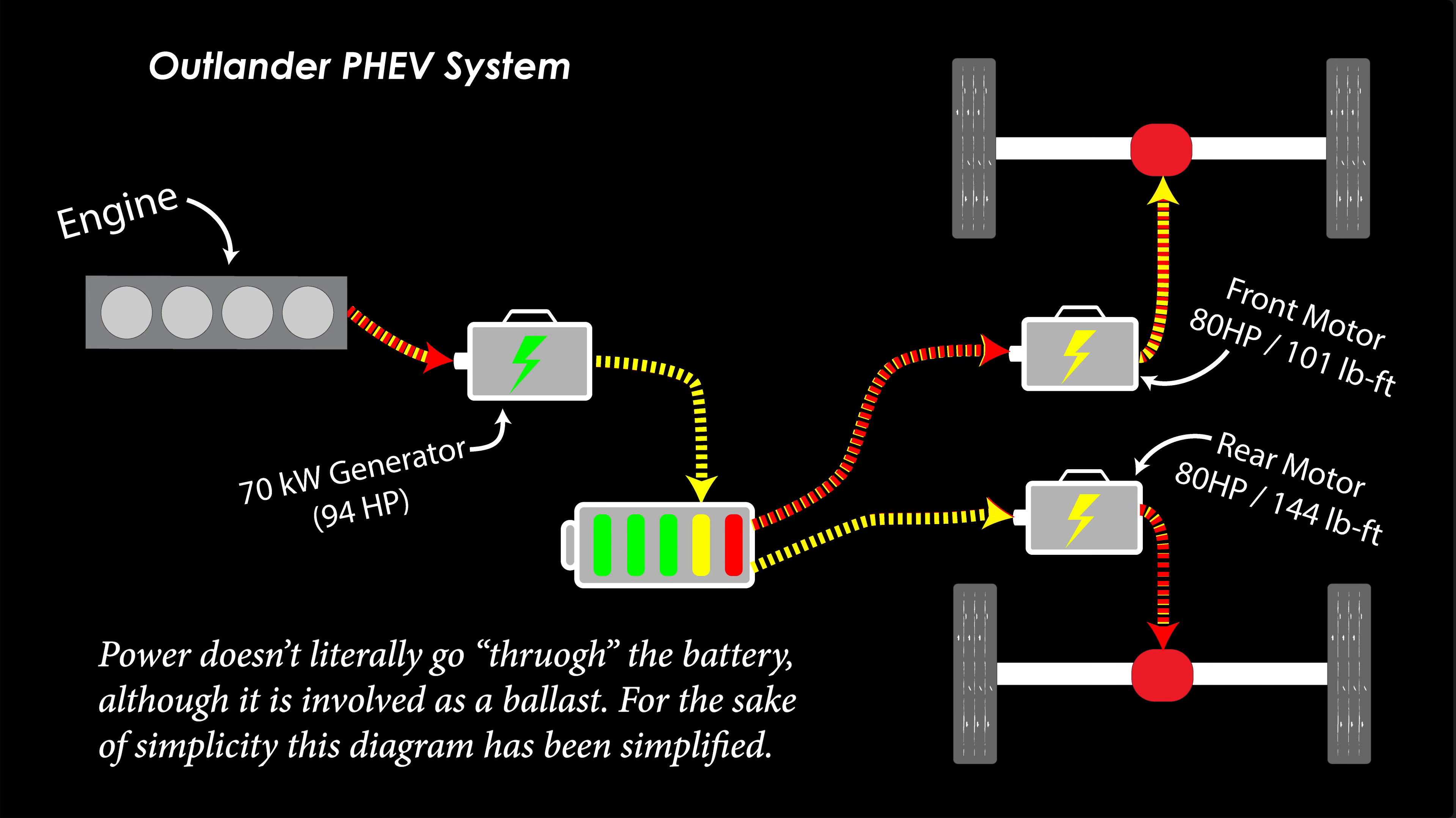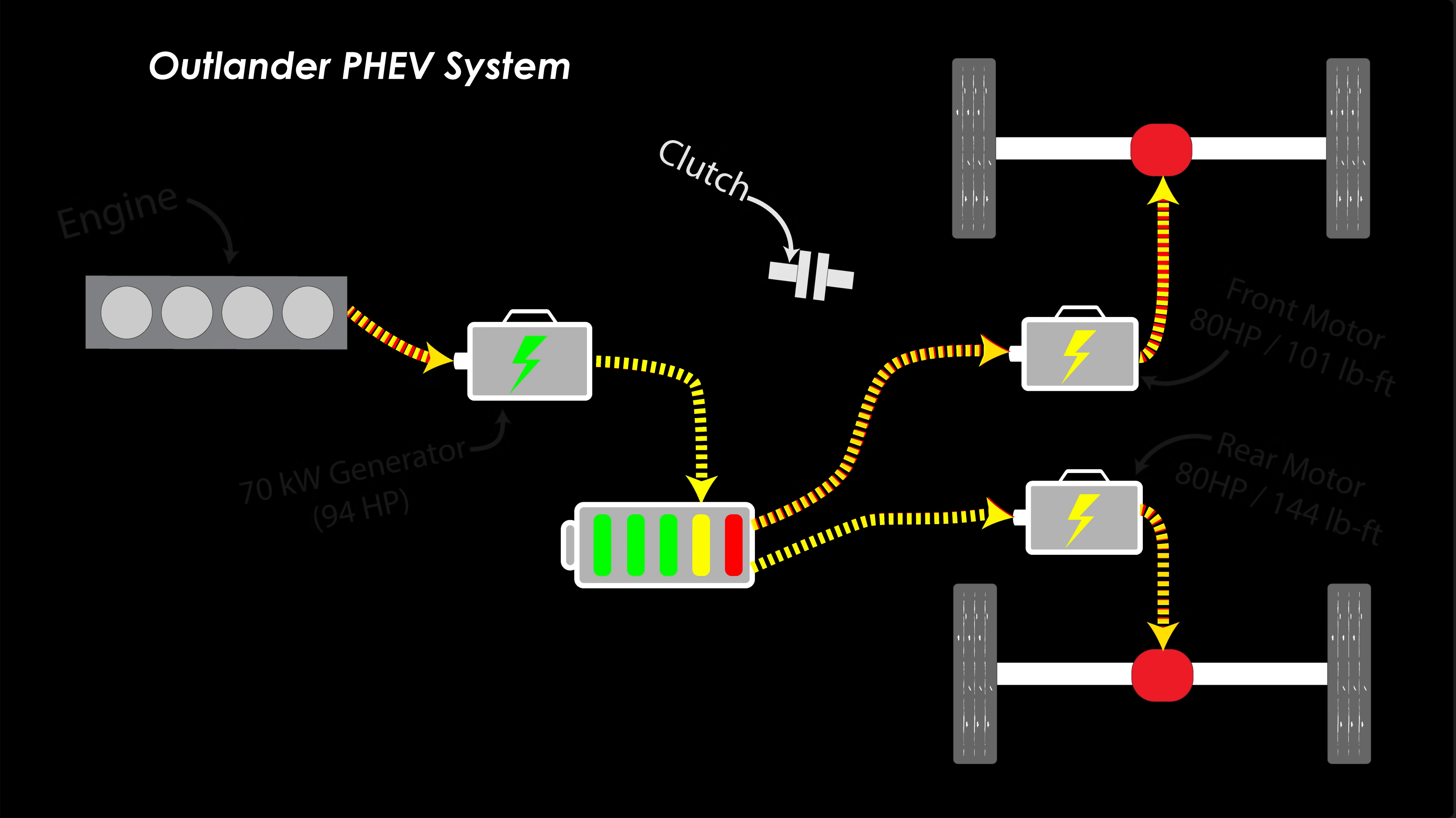Inside the housing where we find the generator and the front electric motor is also a clutch. This clutch can engage and send power mechanically via a fixed ratio to the front wheels. This is what Mitsubishi refers to as their parallel hybrid mode. Now let's put everything together.